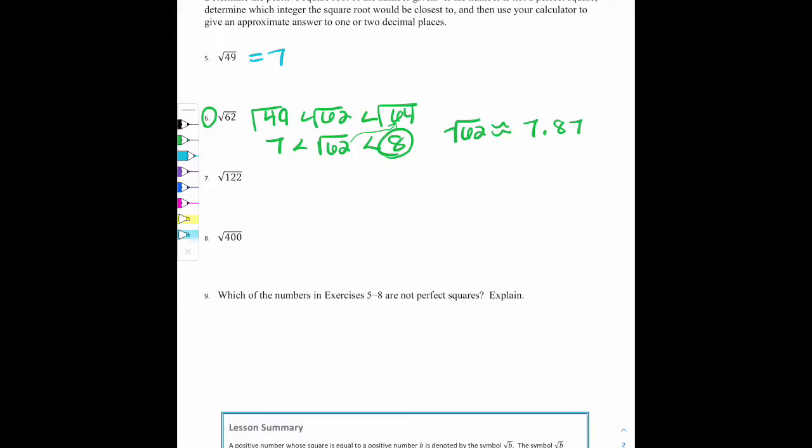If we look at 122, the square root of 122, that is not a perfect square. So we are going to approximate like we did in number 6. 122 fits between which two perfect squares? Well, 121 would be just below it. And the next one larger would be 144.